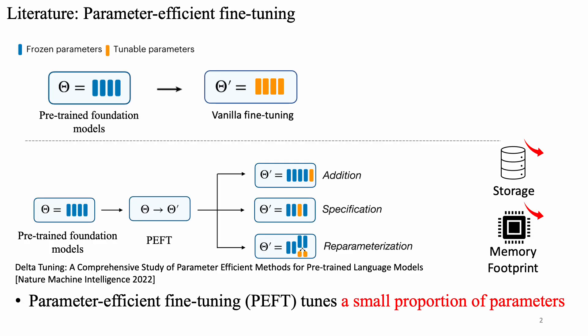Compared to vanilla fine-tuning, which fine-tunes all the model parameters of pre-trained weights, parameter-efficient fine-tuning tunes only a small proportion of the model parameters. In this way, we can largely save the storage and GPU memory footprint.